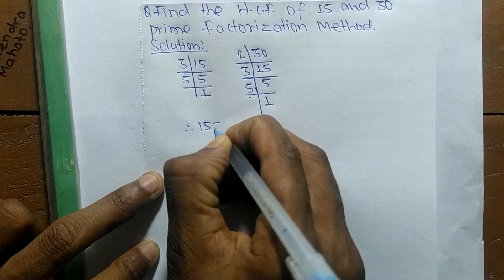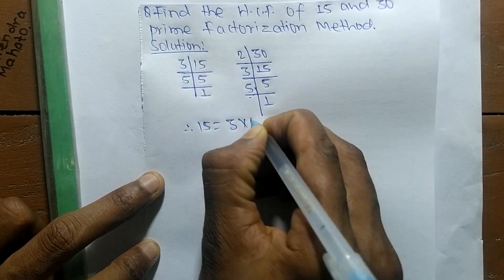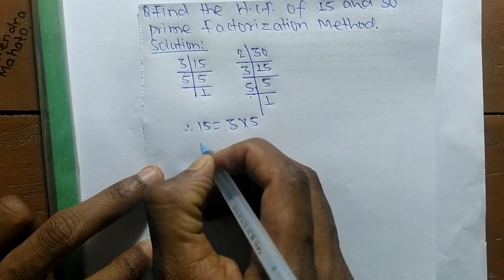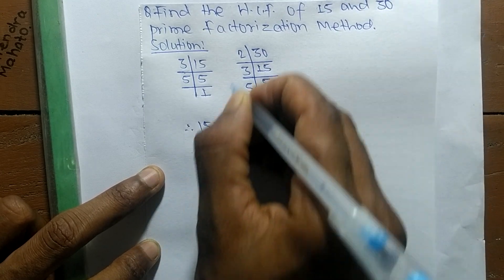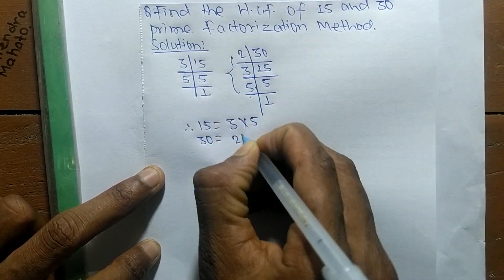From these prime factors, we can write 15 equals 3 times 5, and 30 equals 2 times 3 times 5.